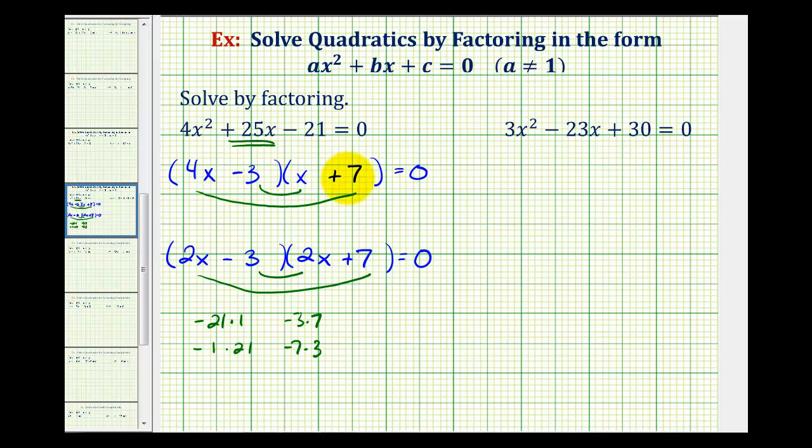Looking at our first possibility, here we have negative 3x plus 28x. I think we lucked out here because notice how we do have positive 25x, which means this is the correct factorization of the trinomial.